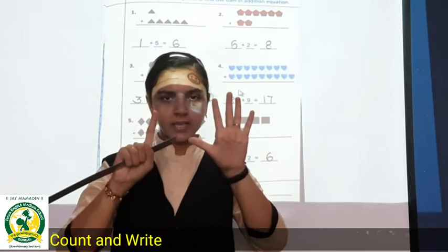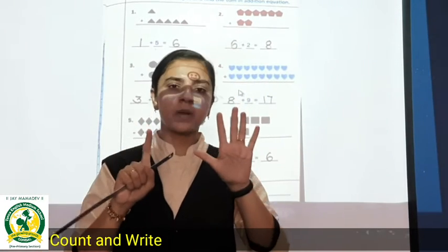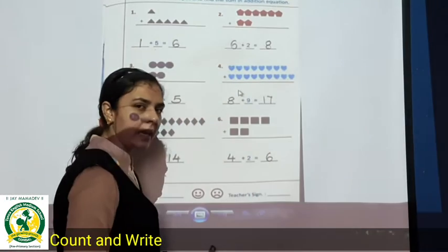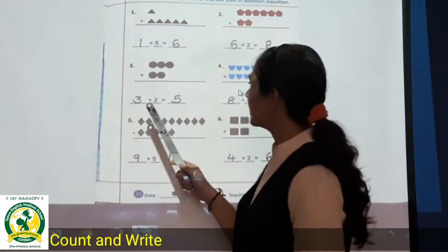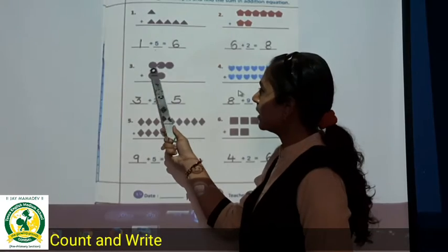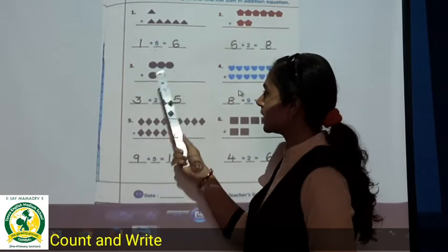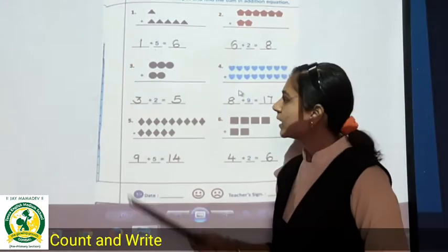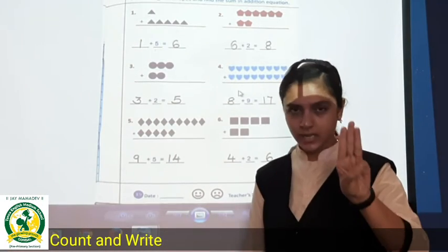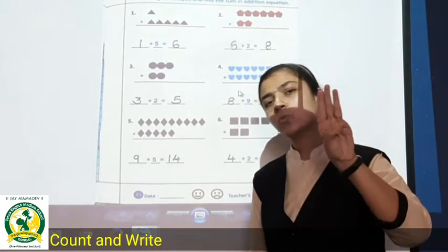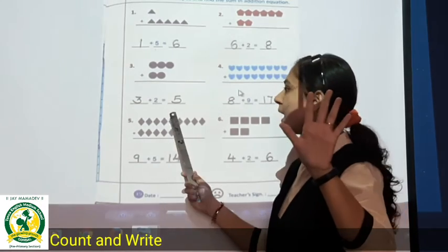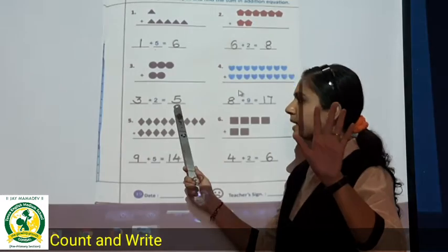Six plus two — how many are we getting? Eight. Now see the next one. Circles are there. How many circles? Three. One, two, three. So we have written here three. Now we have added two more circles. One, two. So total how many? Five. So we will write here five.